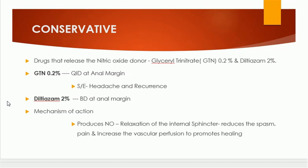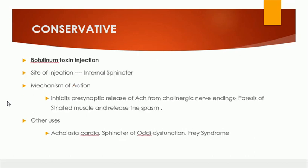Another part of conservative management is botulinum toxin injection. The site of injection is the internal sphincter. The mechanism of action is that botulinum toxin inhibits presynaptic release of acetylcholine from cholinergic nerve endings. This results in paresis of striated muscle, releasing sphincter spasm and relieving pain.